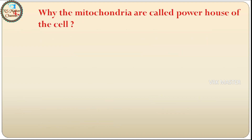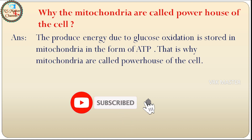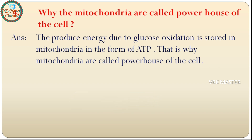Fourth question: why are mitochondria called the powerhouse of the cell? Answer is the energy produced due to glucose oxidation is stored in mitochondria in the form of ATP. That is why mitochondria are called the powerhouse of the cell.